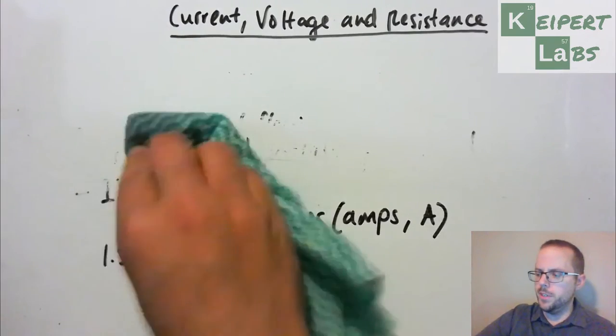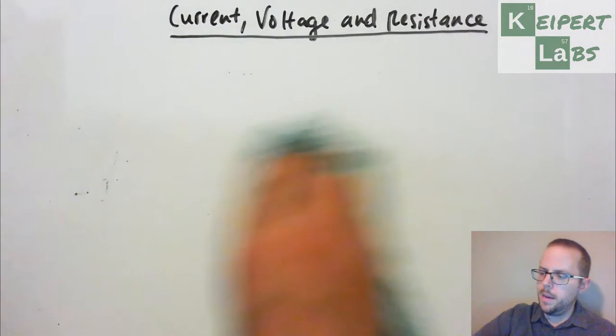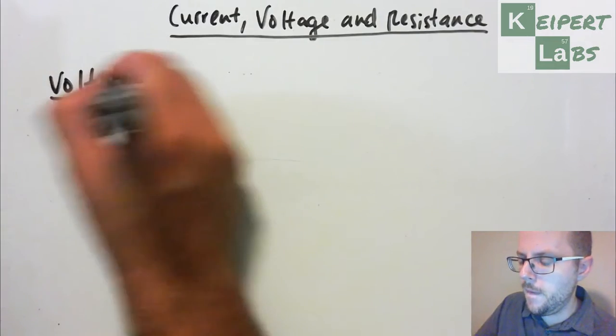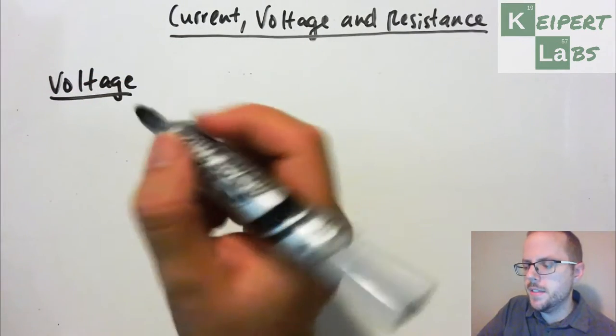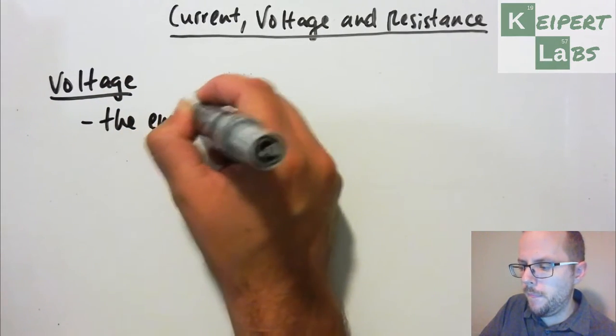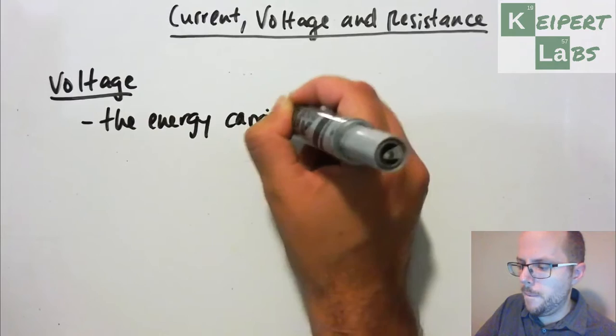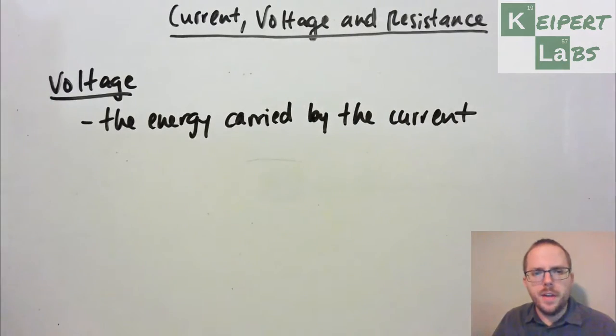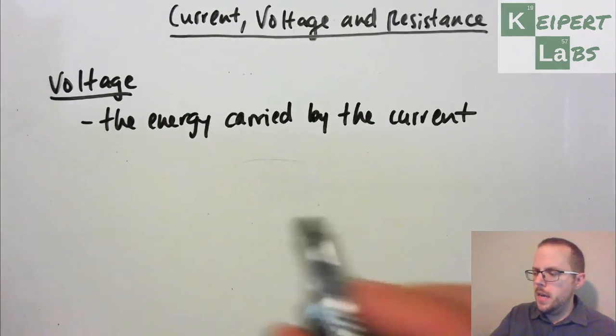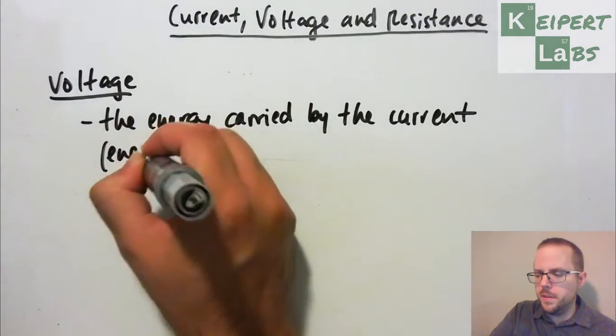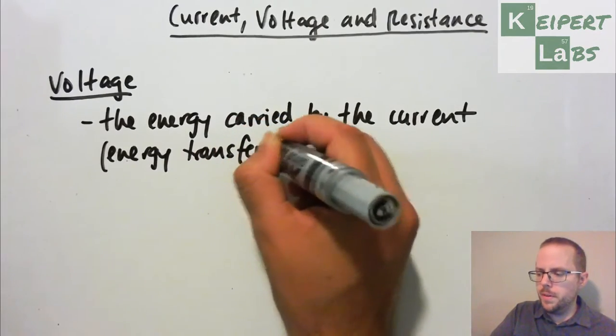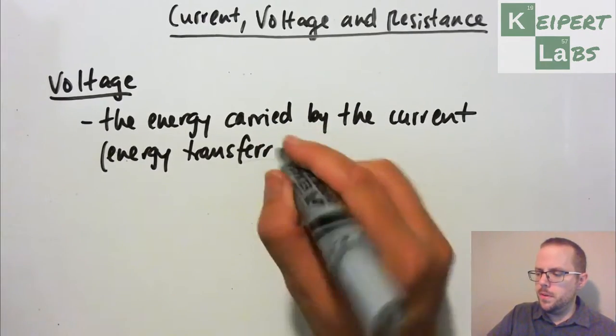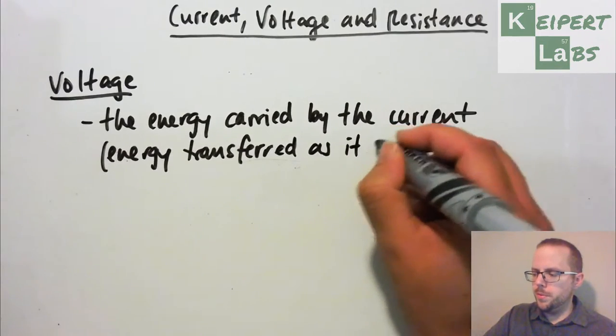Now let's quickly think about voltage. So the voltage is the energy carried by the current. So if we're thinking about that it's flowing through, how much energy is that transferring? We're thinking about it in terms of energy transfer. How much energy is it transferring as it moves through the circuit? Maybe transferred as it flows through the circuit.